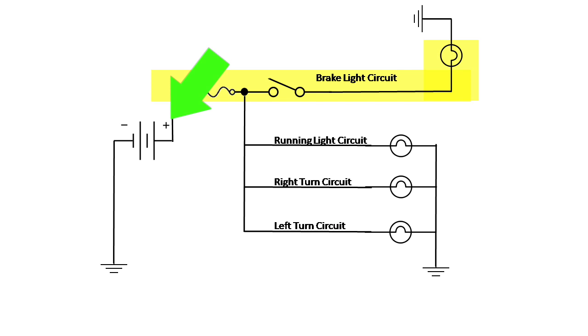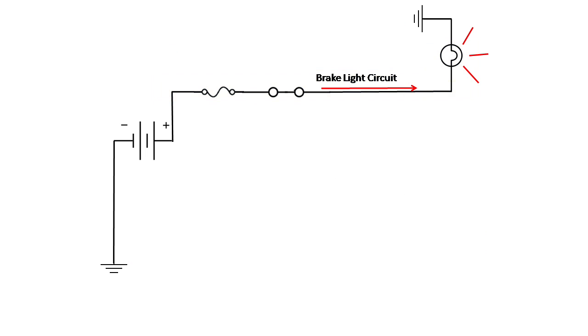All of these circuits connect to the positive side of your battery, and they all have a return to ground, which is what this symbol represents. All of these connect to the negative side of your battery, whether they connect directly or whether they go to the frame of your bike.